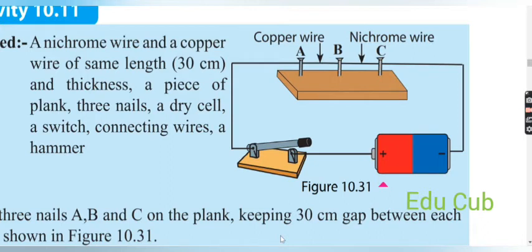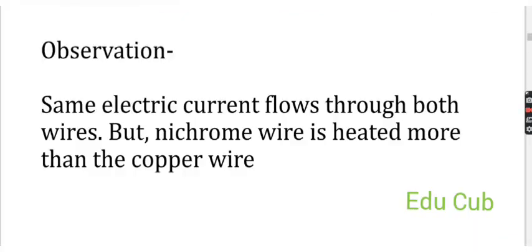Touch the copper and nichrome wires, then close the switch for about one minute to allow current to flow. Touch the two wires again and discuss your observation. The observation will be: the same electric current flows through both wires, but the nichrome wire is heated more than the copper wire.